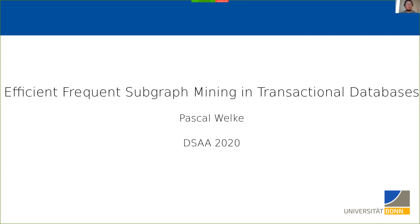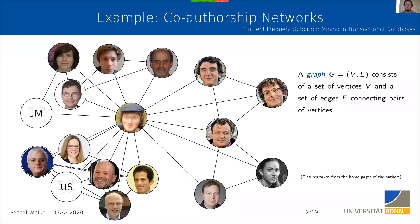It's about graphs, which are a very general way of describing things that happen in real life whenever objects are connected to other objects. For example, you can have a co-authorship network, where persons are connected if they wrote a paper together at some point.